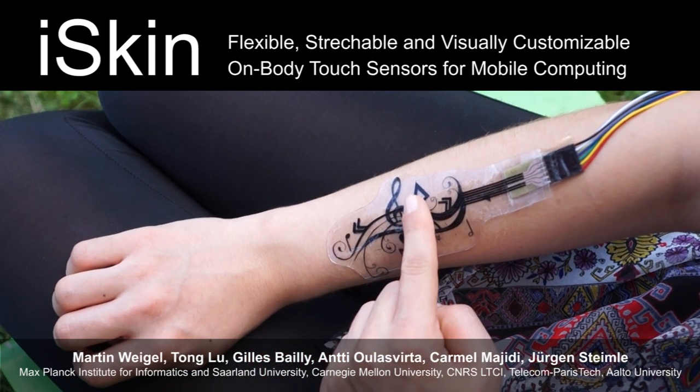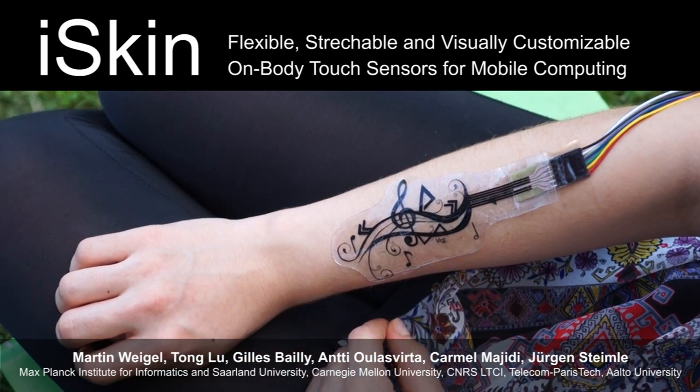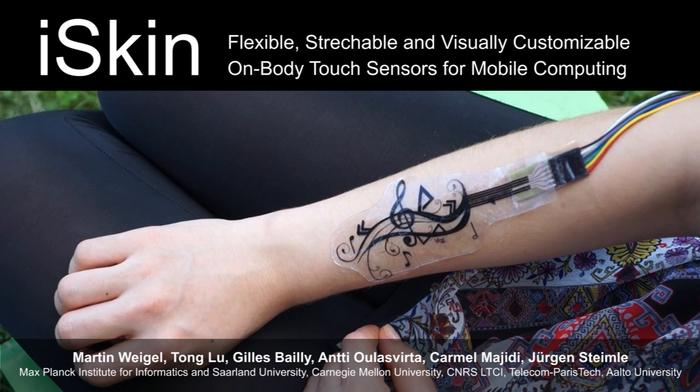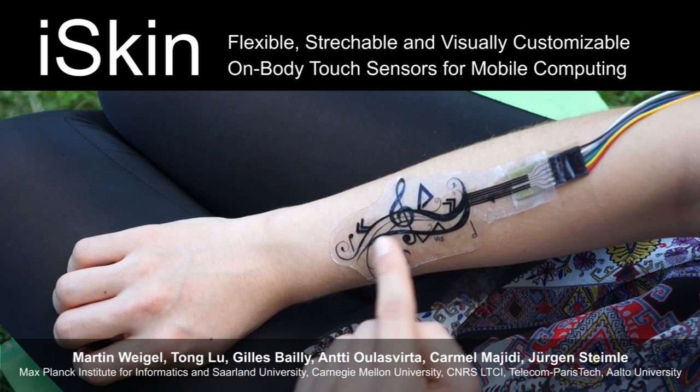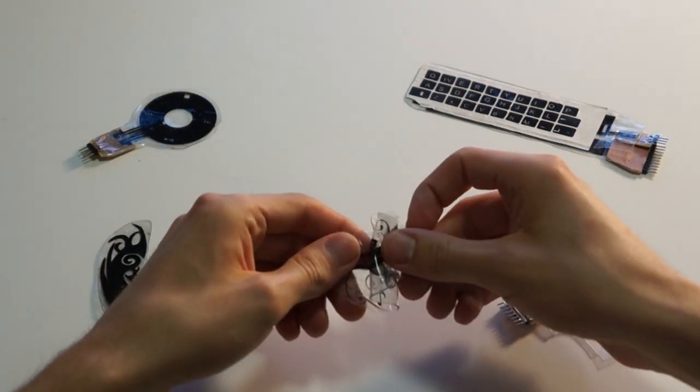iSkin is a sensor surface for touch input on the human body. It can be worn directly on the skin as it is made of biocompatible materials. It is thin, flexible, and stretchable.